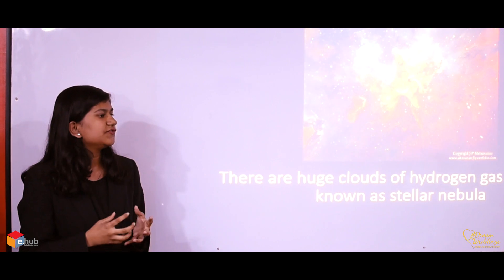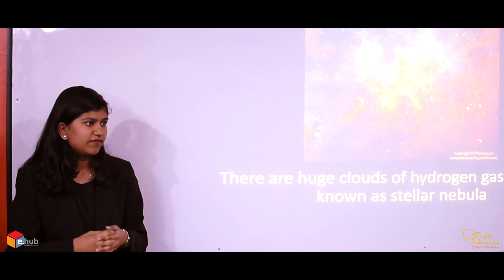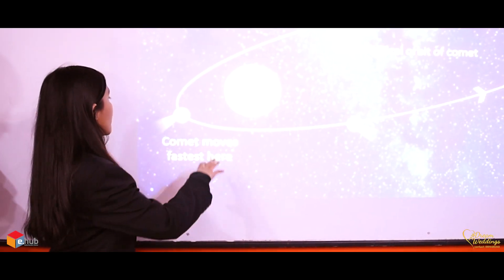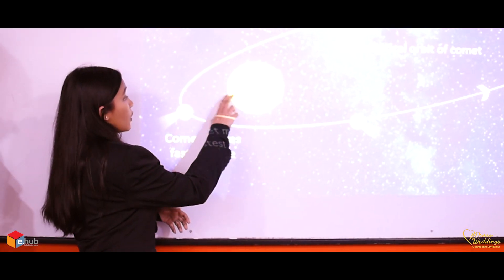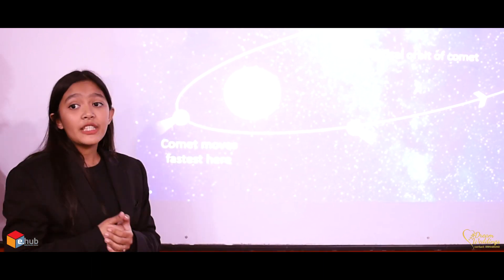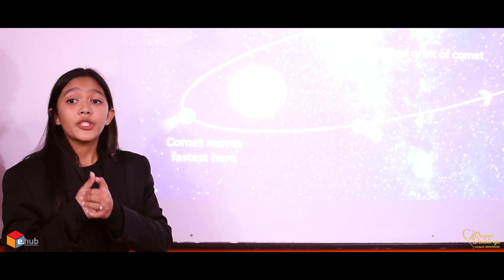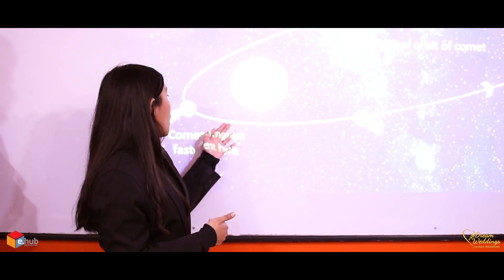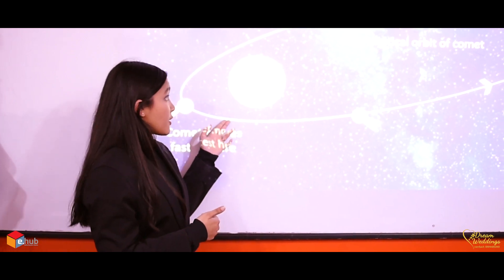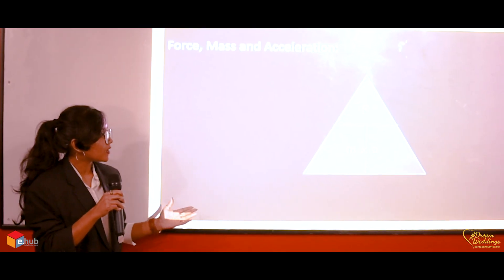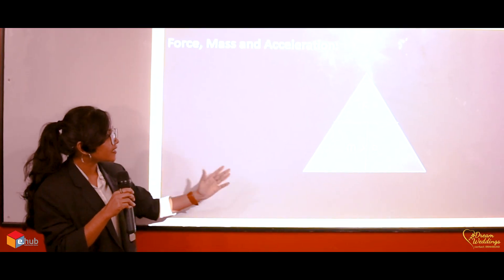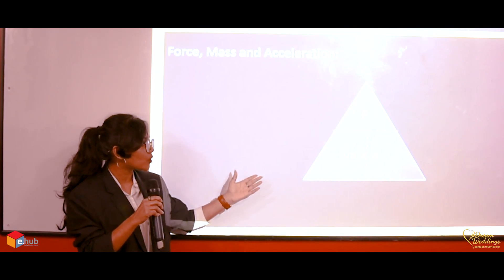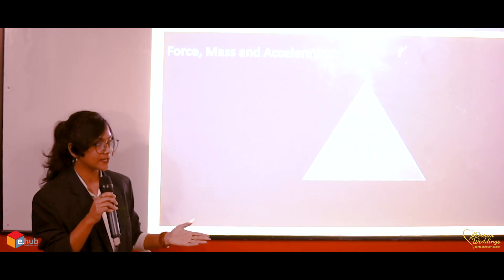These gas clouds attract each other by gravitational force. When the comet is closer to the sun, the GPE decreases, which increases the chaotic energy, causing the comet to move in a faster way. If we consider mass constant, then if there is a change in force, acceleration varies accordingly.